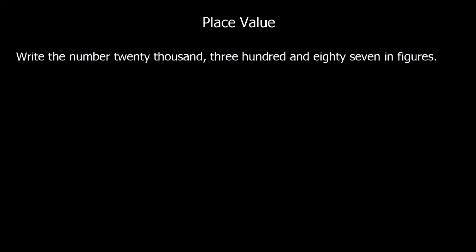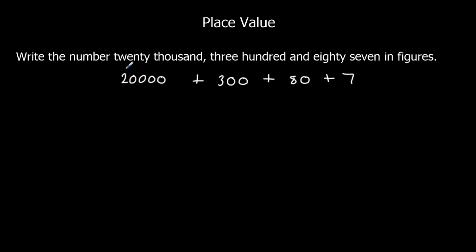Write the number twenty thousand, three hundred and eighty-seven in figures. So 20,000 — that's 2 in the ten-thousands column. Then we've got the thousands column, hundreds, tens, and ones. We've got 3 in the hundreds column, 80 which is 8 tens, and 7. We've got nothing in the thousands column so we put a zero there. 3 in the hundreds, 8 in the tens, and 7 in the ones. So that's 20,387.